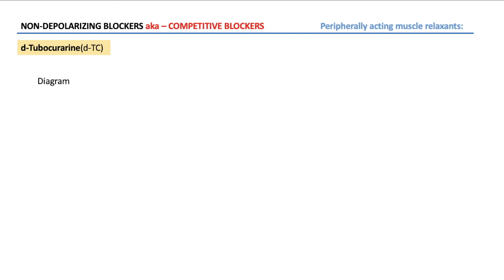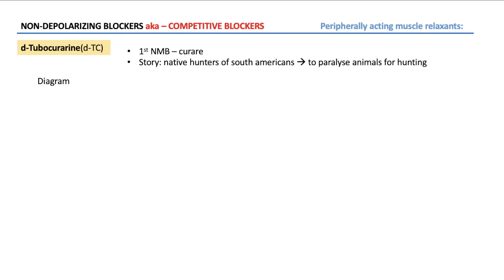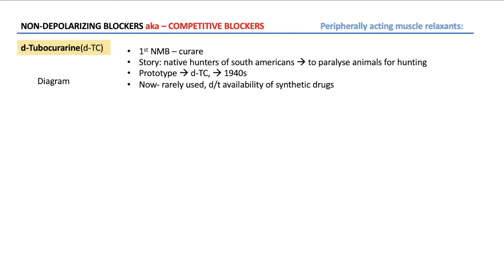Coming to D-tubocurarin and how it was discovered — there is a very interesting story. The first neuromuscular blocker was Curare. In earlier days, native hunters of South America used Curare as an arrow poison. The tip of the arrow would have Curare, and when it pierced into the animal, it caused paralysis. It was used for hunting purposes. The prototype drug D-tubocurarin was established in the 1940s and is now rarely used because of the availability of synthetic drugs with more advantages. D-tubocurarin, being a bulky quaternary compound with a positively charged nitrogen, binds very adherently to the NM receptor on the postsynaptic membrane.